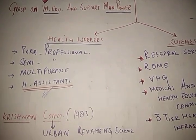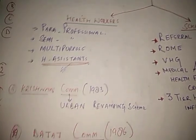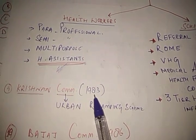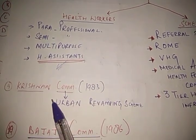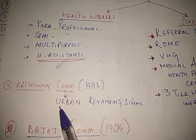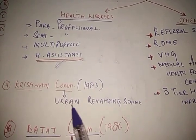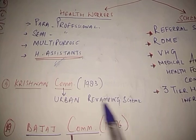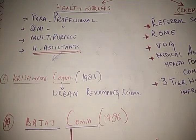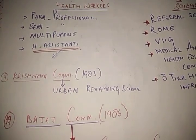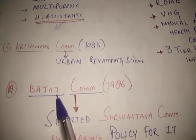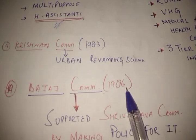A few points about the Krishnan Committee: it came in 1983 and is just to strengthen the health of urban people, also called the Urban Revamping Scheme. It is not very important. Then we have the Bajaj Committee, which came in 1986.